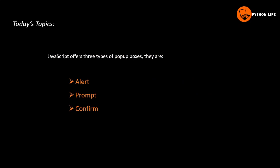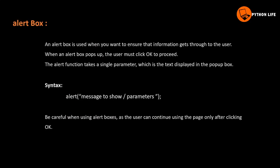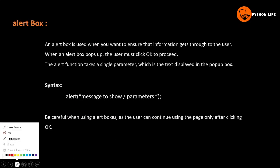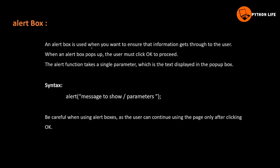JavaScript supports three types of pop-up boxes: alert, prompt, and confirm. First, the alert box — an alert box is used when you want to ensure that information gets through to the user.